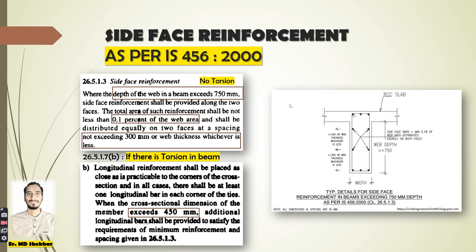The general requirement that I have explained is diagrammatically represented in this figure. Please have a glance over it. This is the slab thickness. This is the web width. This is the depth of web. This is the spacing of rebar. And this is the minimum area of Side Face Reinforcement that is to be provided. Let's move into the next slide.